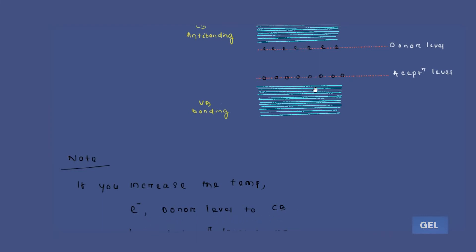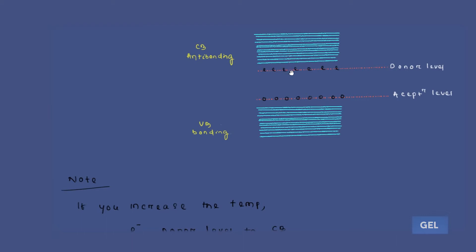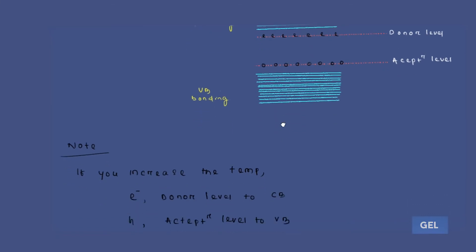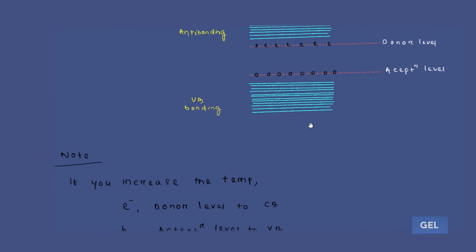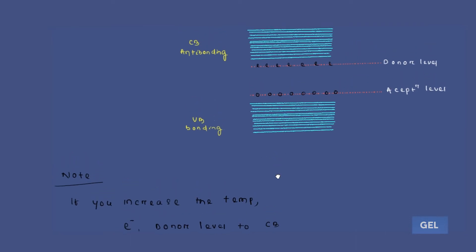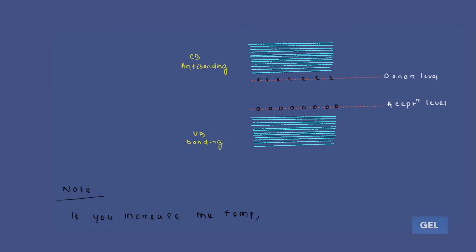In a compensated semiconductor, two things happen simultaneously. When you increase the temperature above 0K, electron moves from the donor level to the conduction band — that is the common thing. And the interesting thing is: holes move towards the valence band at the same time.